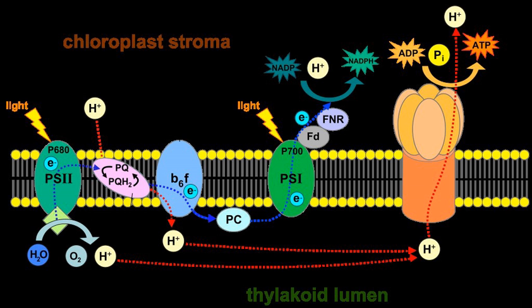These four complexes work together to ultimately create the products ATP and NADPH. The four photosystems absorb light energy through pigments, primarily the chlorophylls, which are responsible for the green color of leaves. The light-dependent reactions begin in photosystem II.